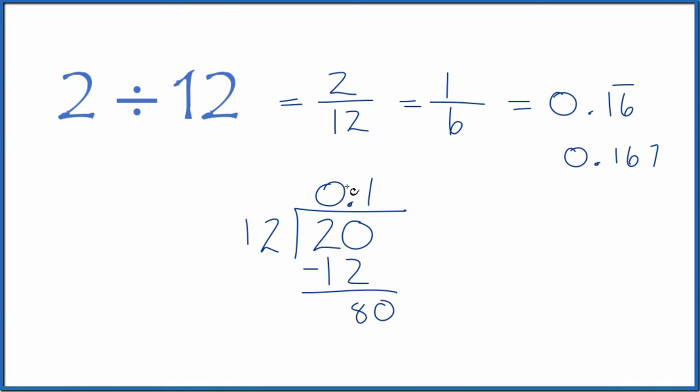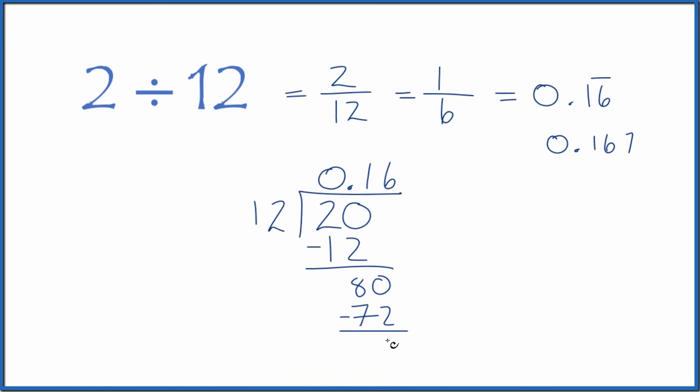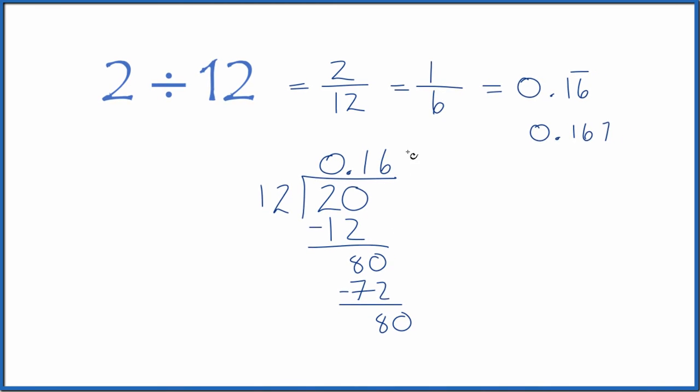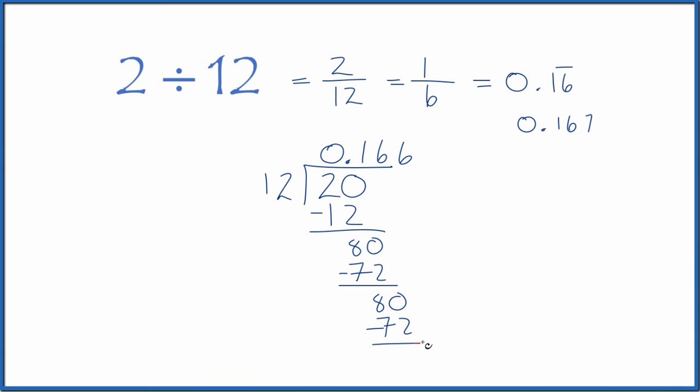12 doesn't go into 8. Call it 80. Move over 1. And 6 times 12, that's 72. So we subtract, we get 8. Call it 80. We move over 1. 6 times 12 is 72. You subtract and get 8. And you can see it just keeps going.